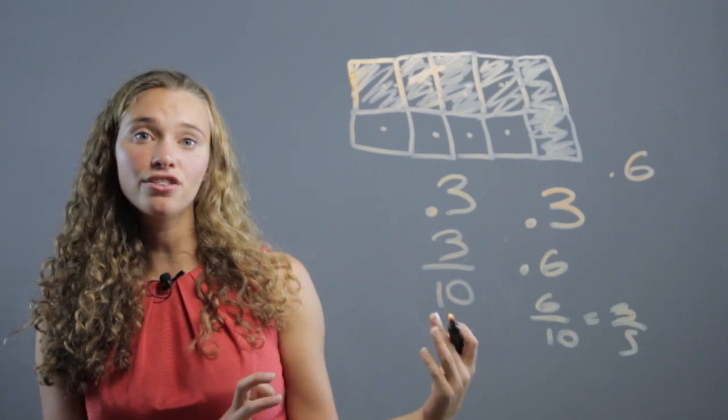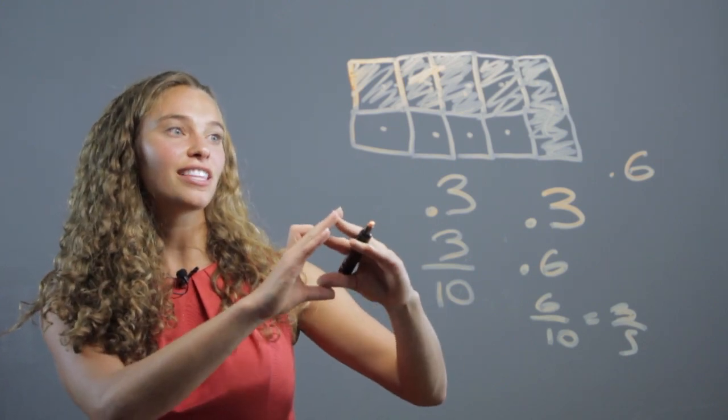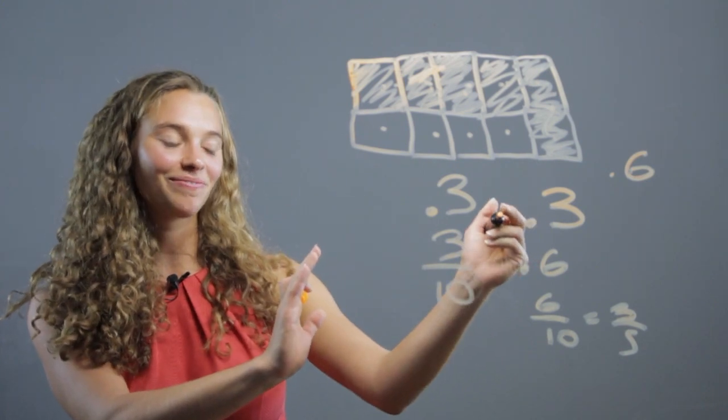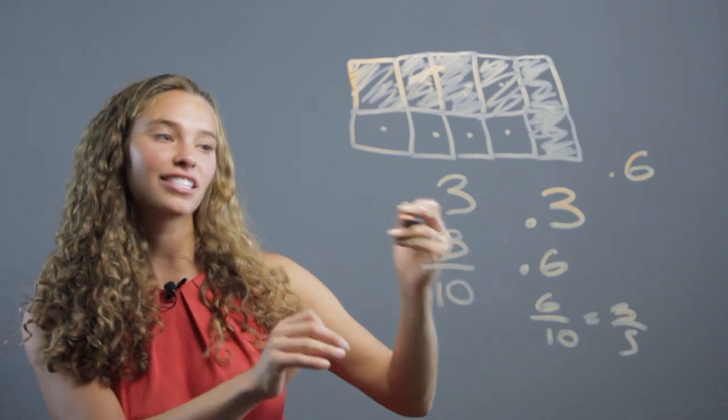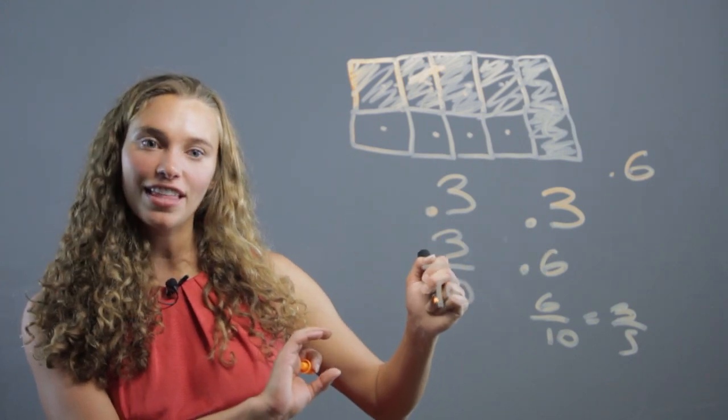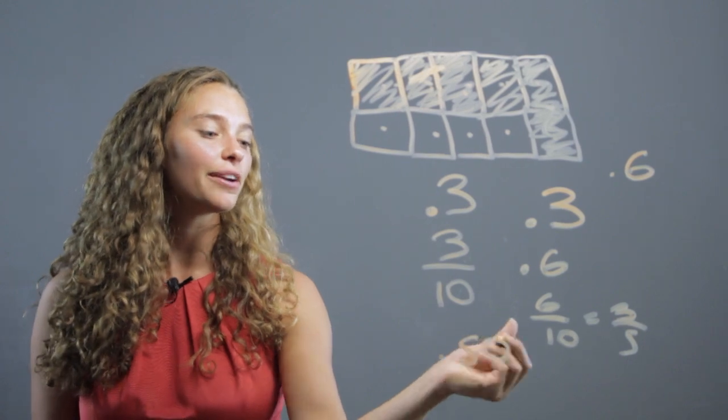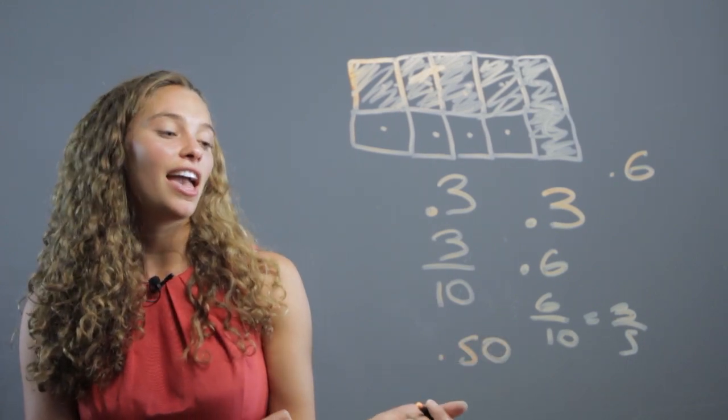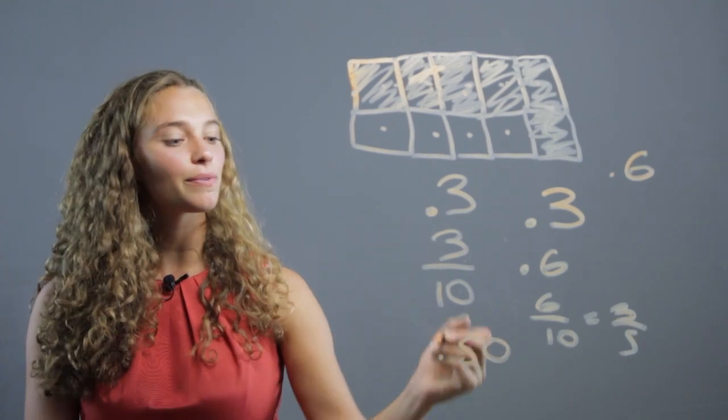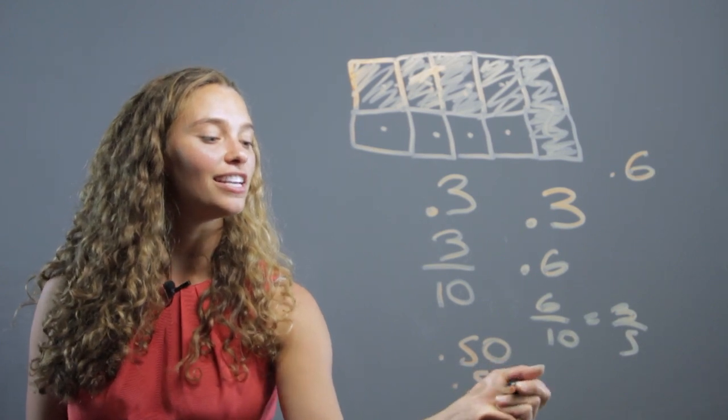If you're doing it with hundredths, you have to have a grid with ten by ten, so it has a hundred squares. Then you can shade, like, fifty of them, and then they know that's point fifty, or point five. Or say you've shaded fifty-six squares—they know that's point fifty-six.